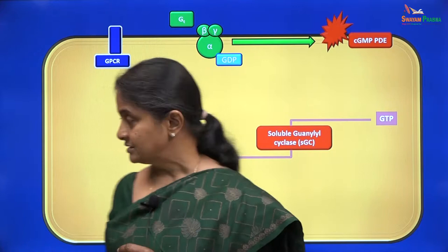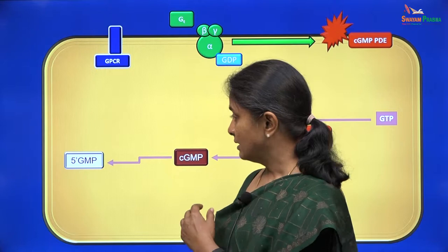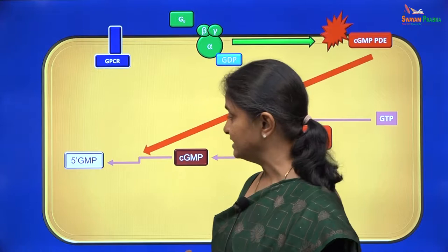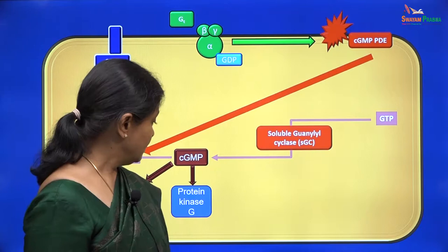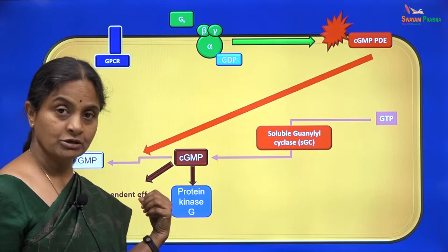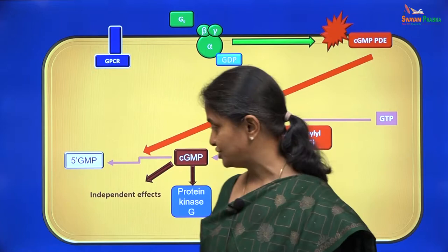cGMP is normally degraded to 5-GMP, and that is how levels of cGMP within the cell decrease — and that is indeed what the membrane enzyme cGMP phosphodiesterase does; it decreases cGMP levels within the cell. cGMP can activate protein kinase G, but it can also have independent effects, independent of protein kinase G.